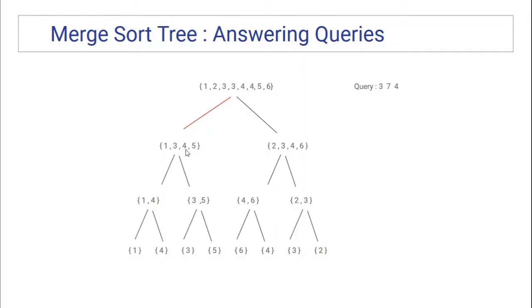We make a recursive call to the left child, which represents the range 1 to 2. The range 1 to 2 is completely outside our query range 3 to 7, so we simply return 0. Then we make the right call: this node represents 3 to 4, which lies completely inside our query range. So in this subarray we have to find how many elements are strictly smaller than 4. Since this node stores the complete sorted subarray, we could traverse each element.